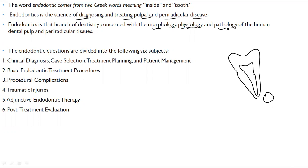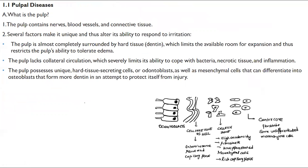The endodontic questions can be divided into six subjects: first, you diagnose what it is — it can be a periradicular cyst, reversible pulpitis, or irreversible pulpitis. Then case selection, what you plan for treatment, patient management, basic endo procedures, procedural complications, adjunctive therapy that should be given, and post-treatment evaluation. We'll be studying about all of this in detail.